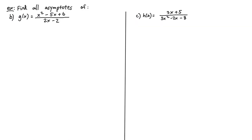Let's look at example B. We want to find all asymptotes of g of x equals x squared minus 5x plus 6 divided by 2x minus 2. Let's start by finding the vertical asymptotes — we need to factor both numerator and denominator. The numerator x squared minus 5x plus 6 factors as x minus 2 times x minus 3, using numbers negative 2 and negative 3. In the denominator, 2x minus 2 has a common factor of 2, leaving x minus 1.